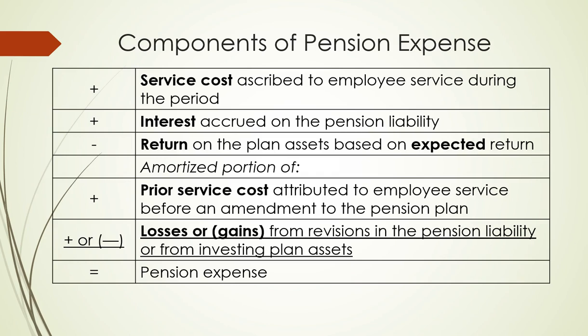The components of pension expense are: service cost, which is ascribed to employee service during the period; interest accrued on the pension liability; return on the plan assets, which is always based on the expected return, not the actual; amortization of any prior service attributed to employee service before a plan amendment; and any losses or gains from revisions in the pension liability or investing plan assets. Adding all of these together gives you pension expense.